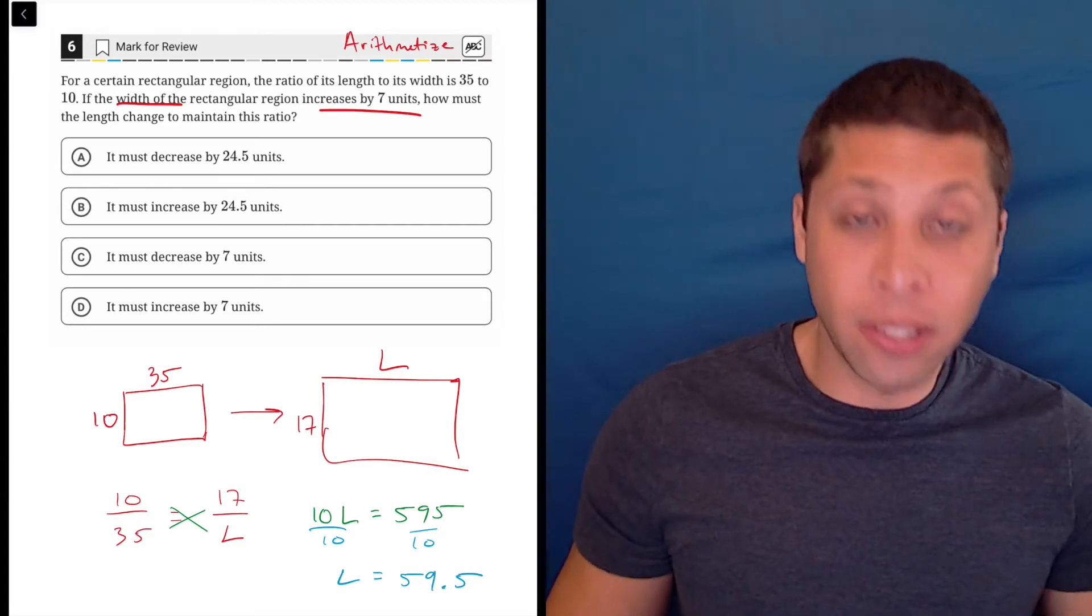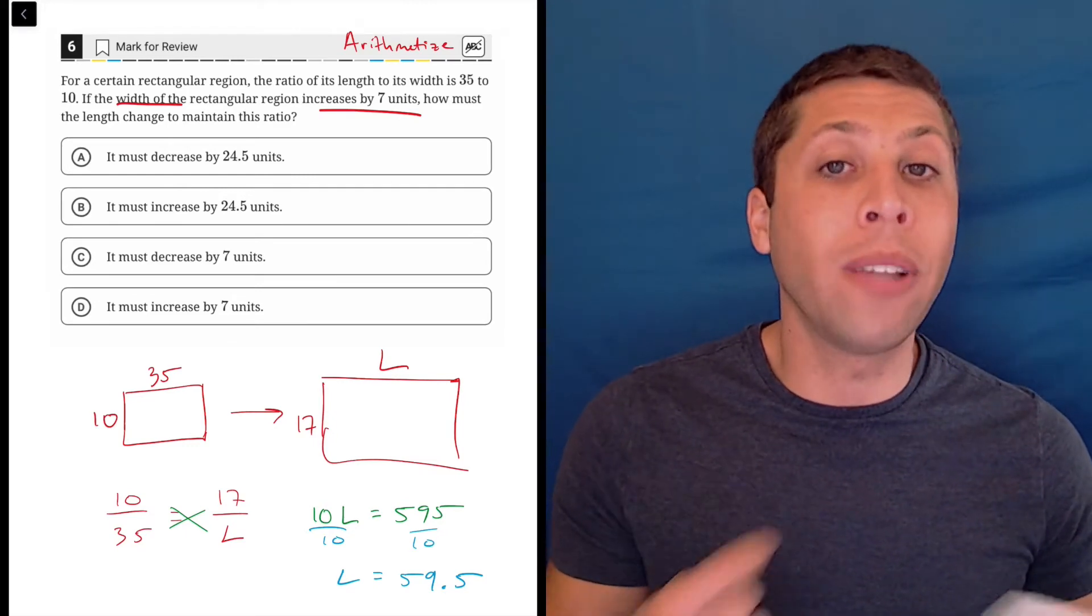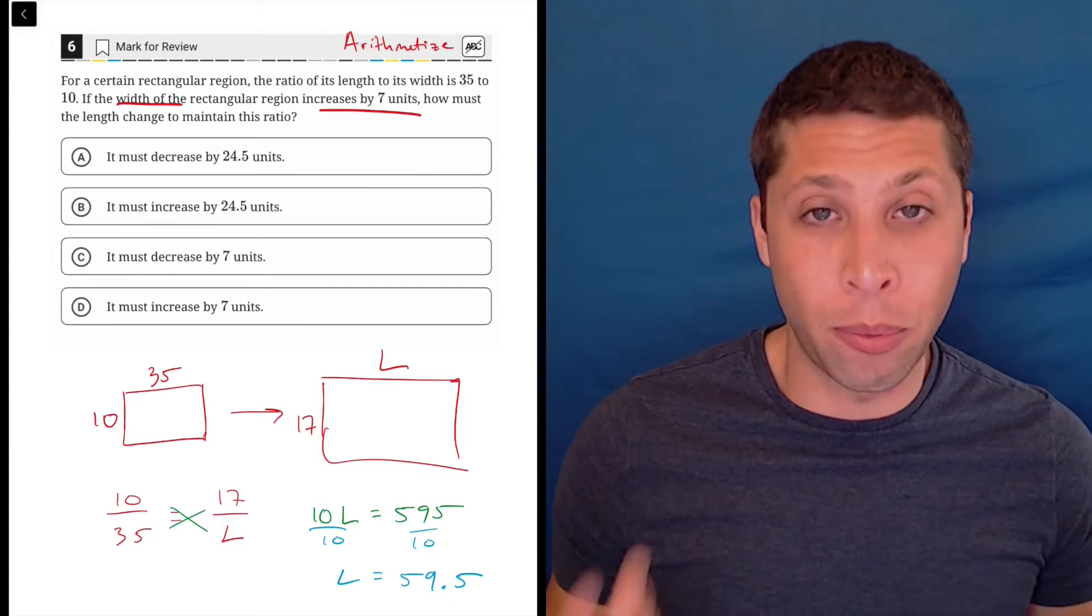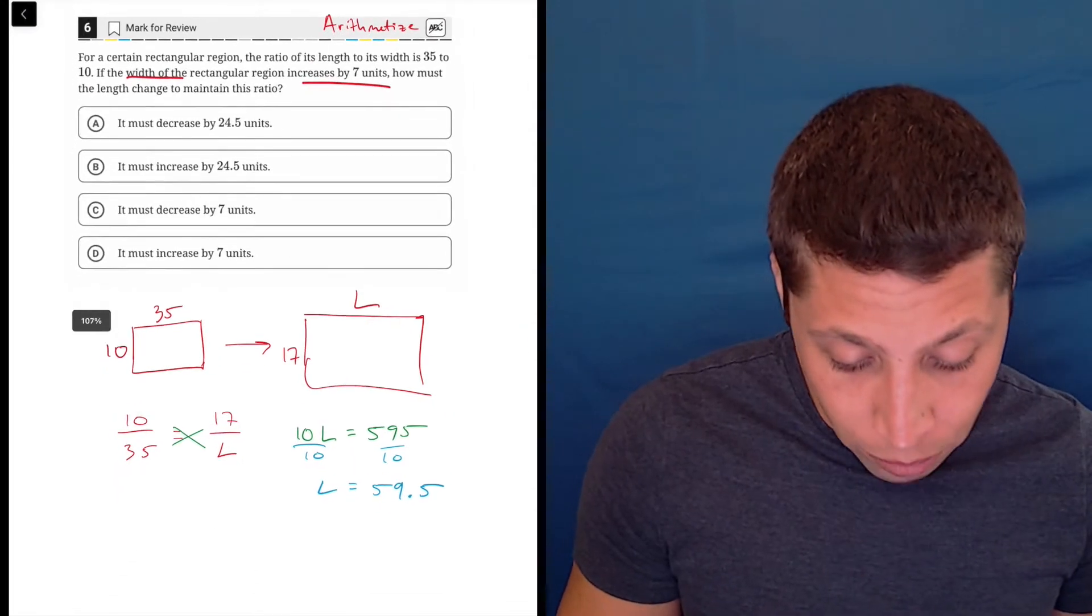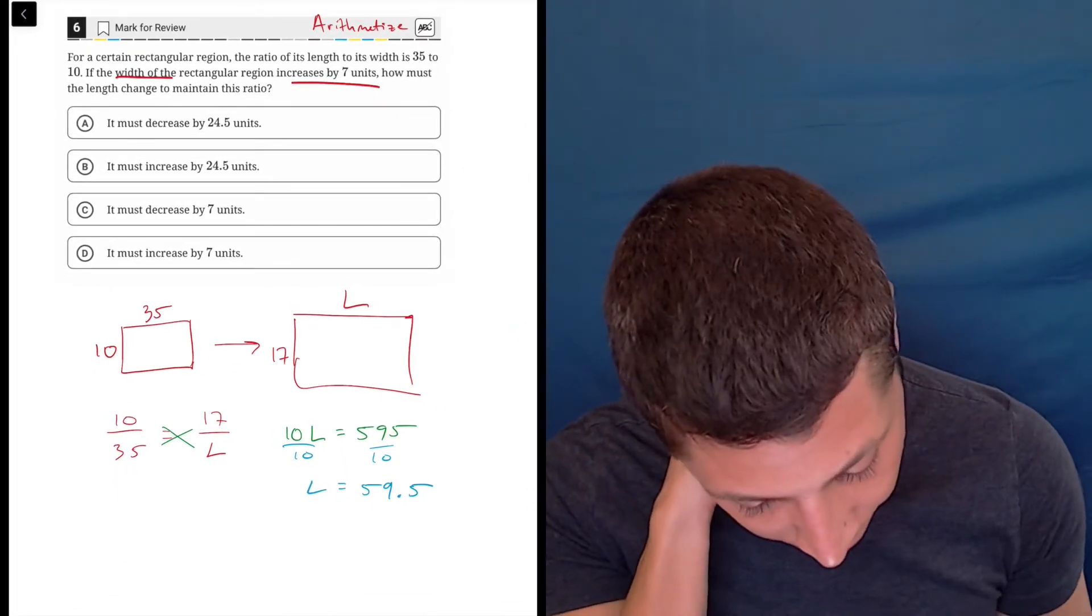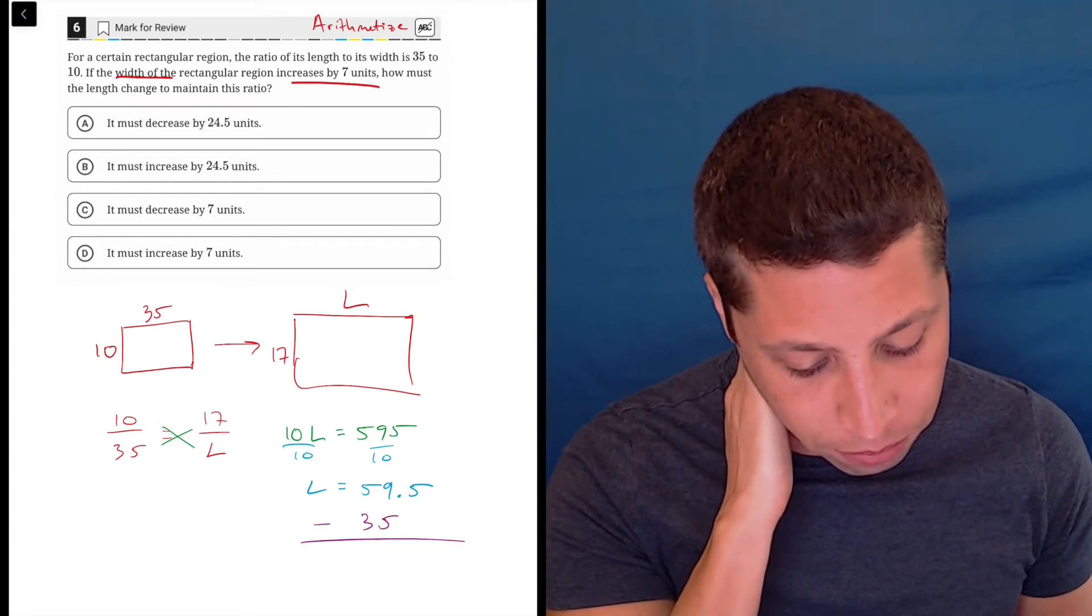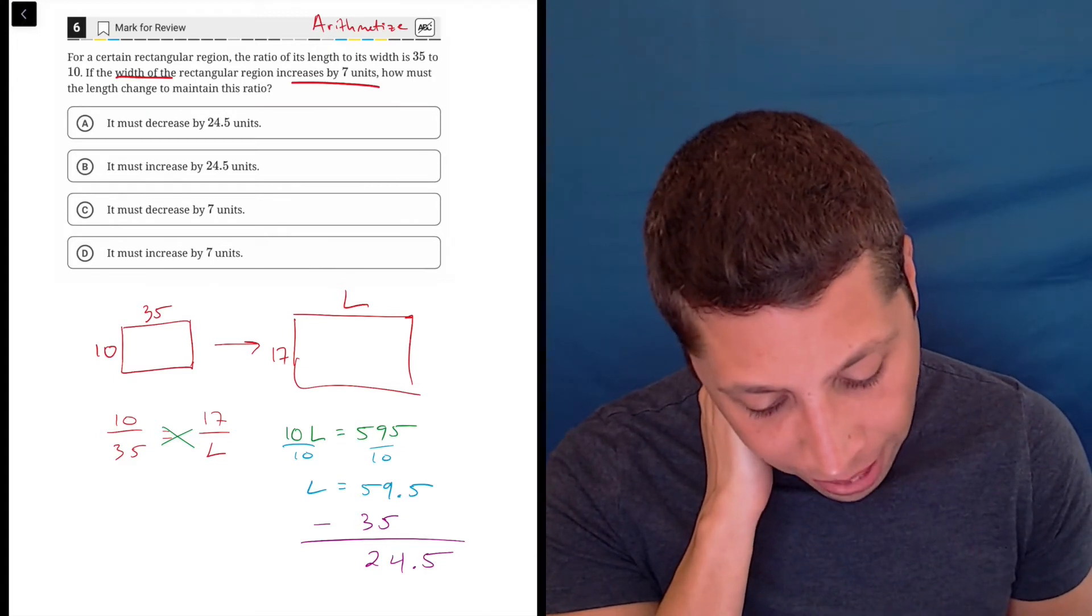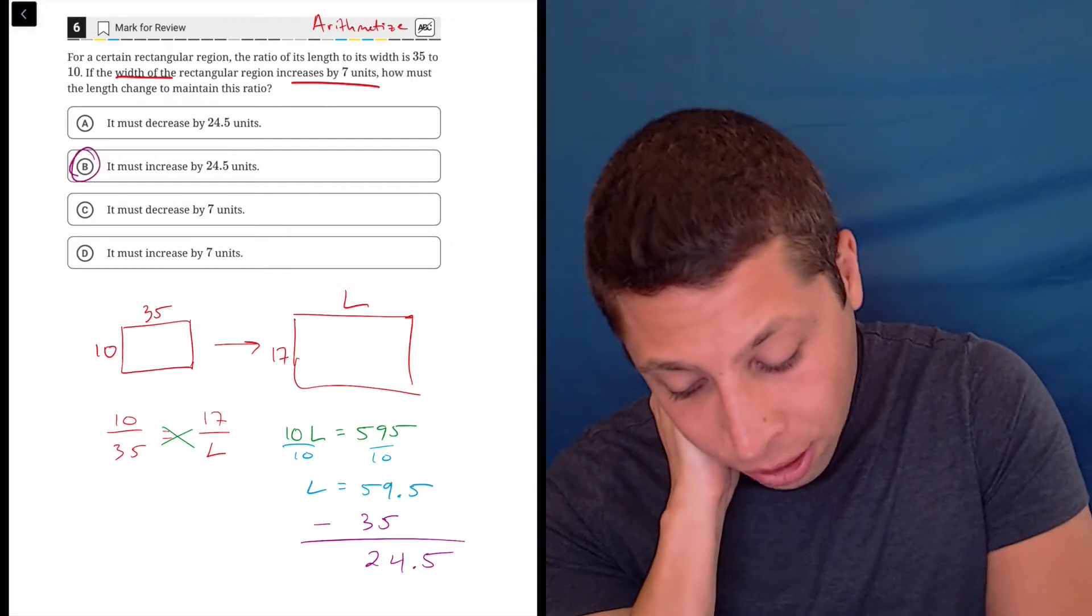But that's obviously not the answer because the answer isn't there, and they don't want to know what the new length would be. We just need to understand how the length changes. We can take our initial length of 35 and subtract it from the 59.5, and that's where we get 24.5, and that is obviously an increase because we have a bigger length. So that's choice B.